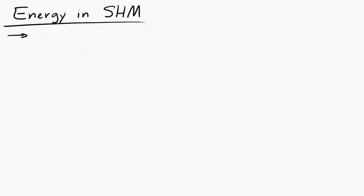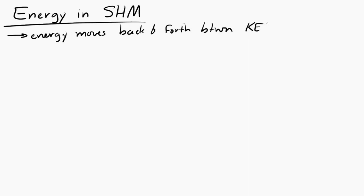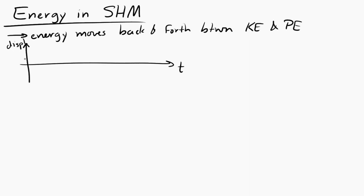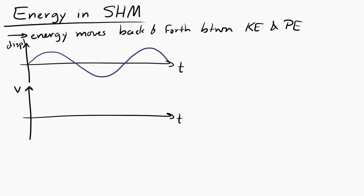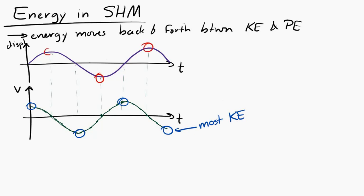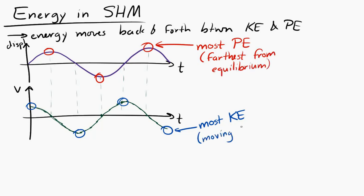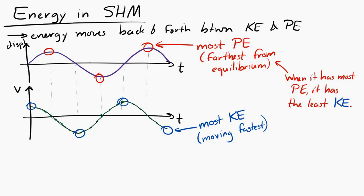Finally, let's look at energy in simple harmonic motion. The energy moves back and forth between kinetic and potential energy. An object has the most kinetic energy when it's moving fastest — at the extrema of the velocity versus time graph. It has the most potential energy when furthest from equilibrium — at the extrema of the displacement versus time graph. When potential energy is at its maximum, kinetic energy is at its minimum, and vice versa — continuously exchanging between the two.